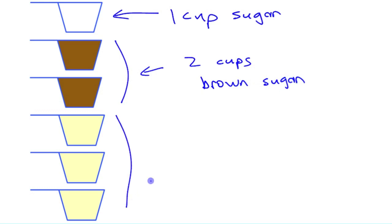Alright, when we were making cookies in the kitchen, we were looking at the ingredients in the recipe, and the recipe called for one cup of sugar, two cups brown sugar, and three cups of flour.